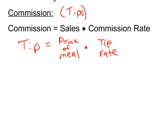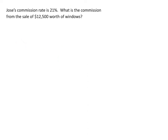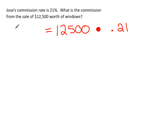For example, a car salesman's salary includes a commission — a percentage of whatever the car was sold for. If his commission rate is 20%, he takes 20% of the car's price as extra pay. Now a problem: Jose's commission rate is 21%. What is his commission from the sale of $12,500 worth of windows? We multiply 12,500 by 0.21.